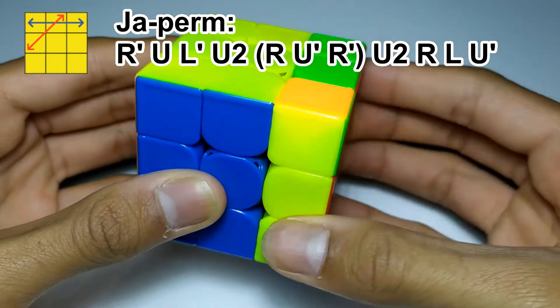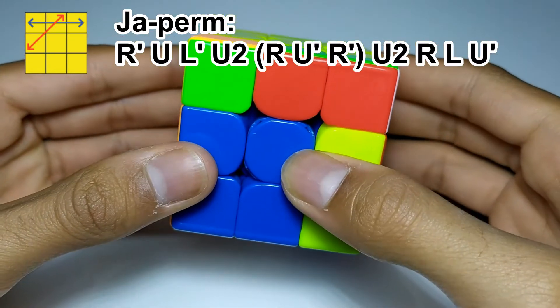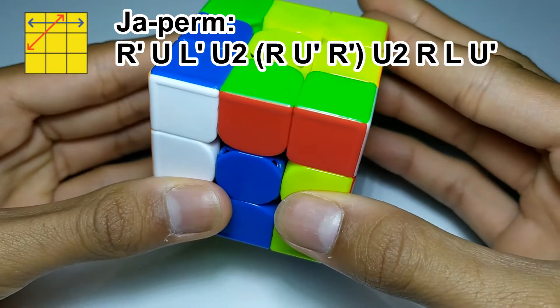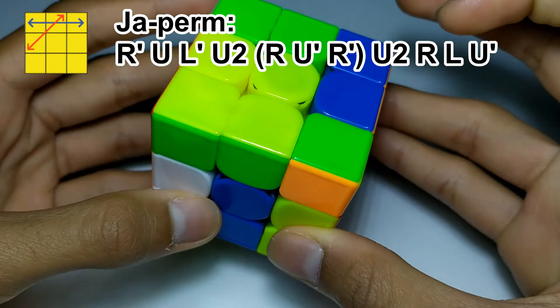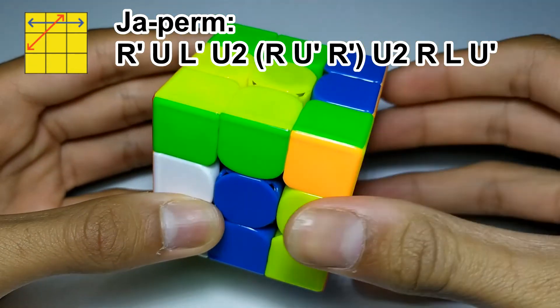And we start with R' U, which takes this F2L pair out, and then L' which takes this F2L pair out, then U2, and we're going to separate them by hiding this one and moving this one over here.